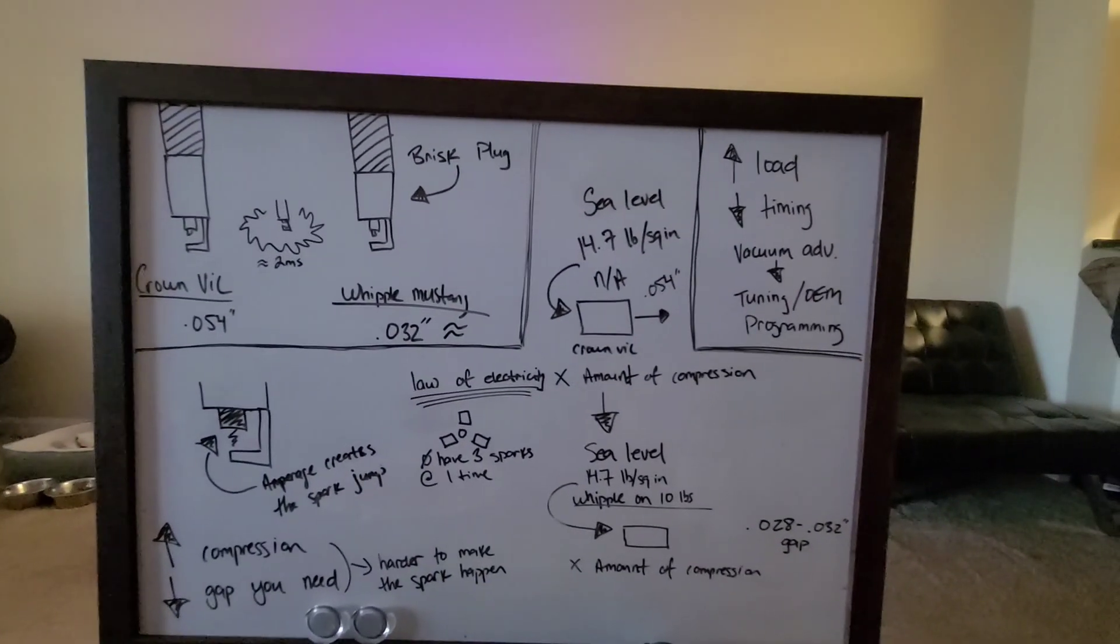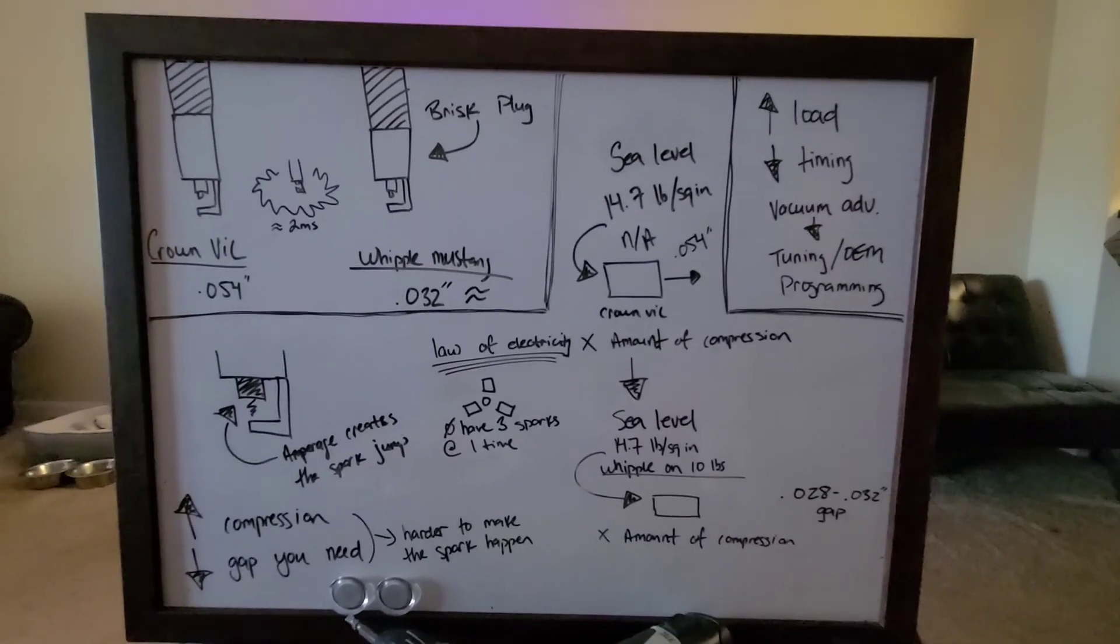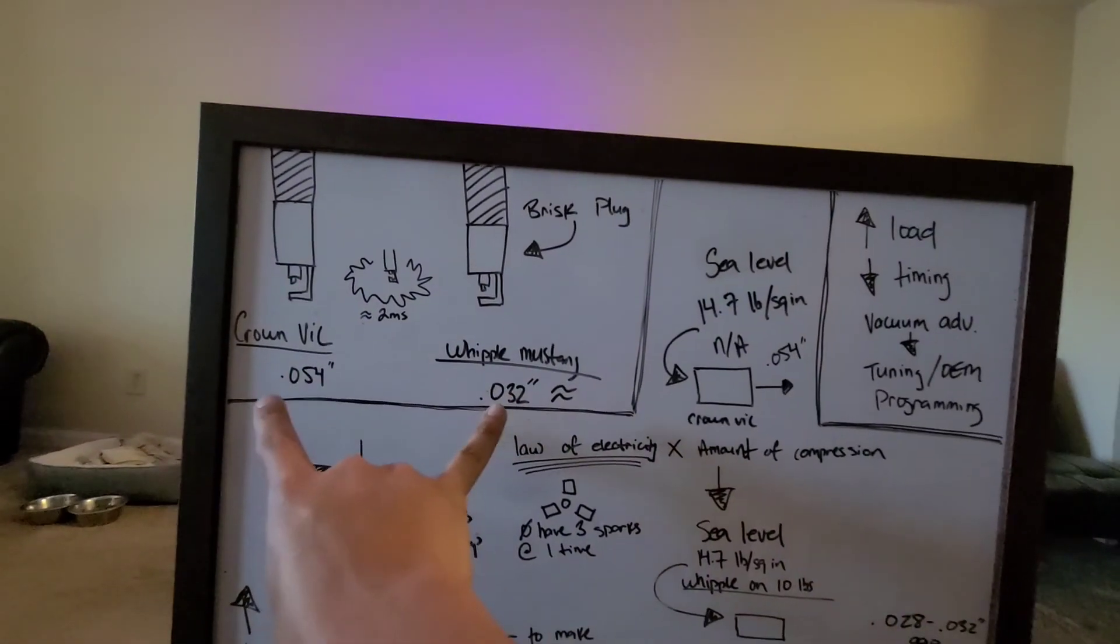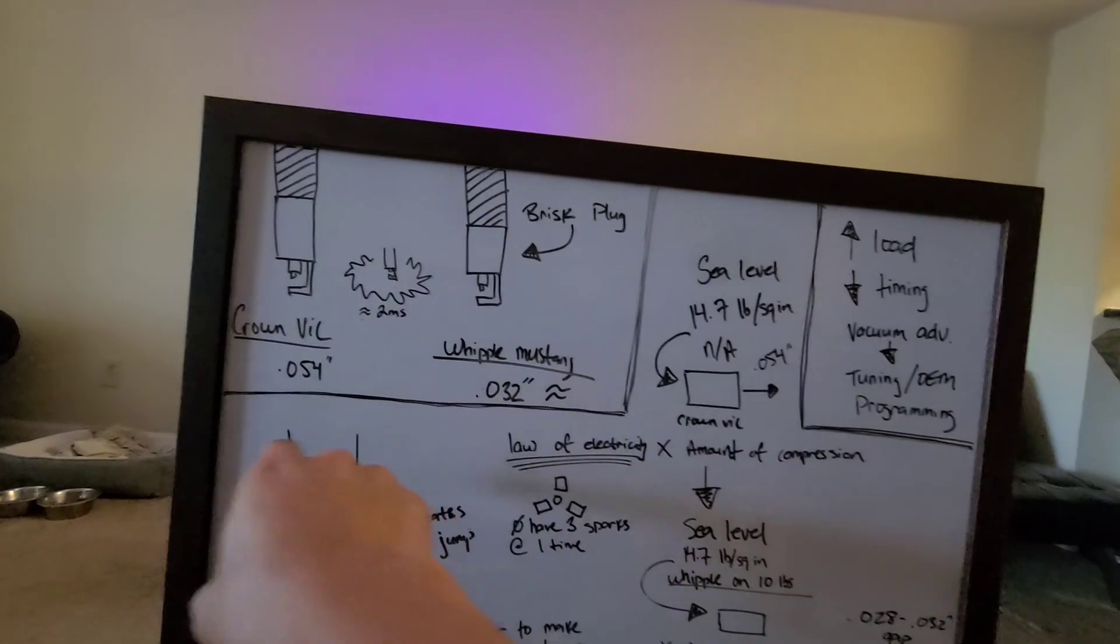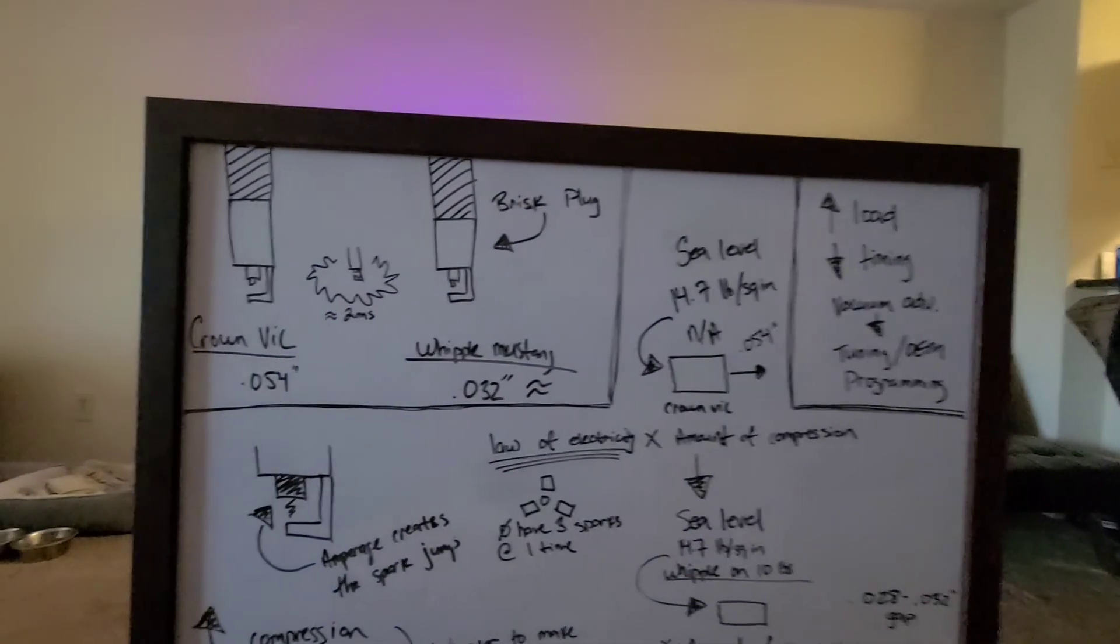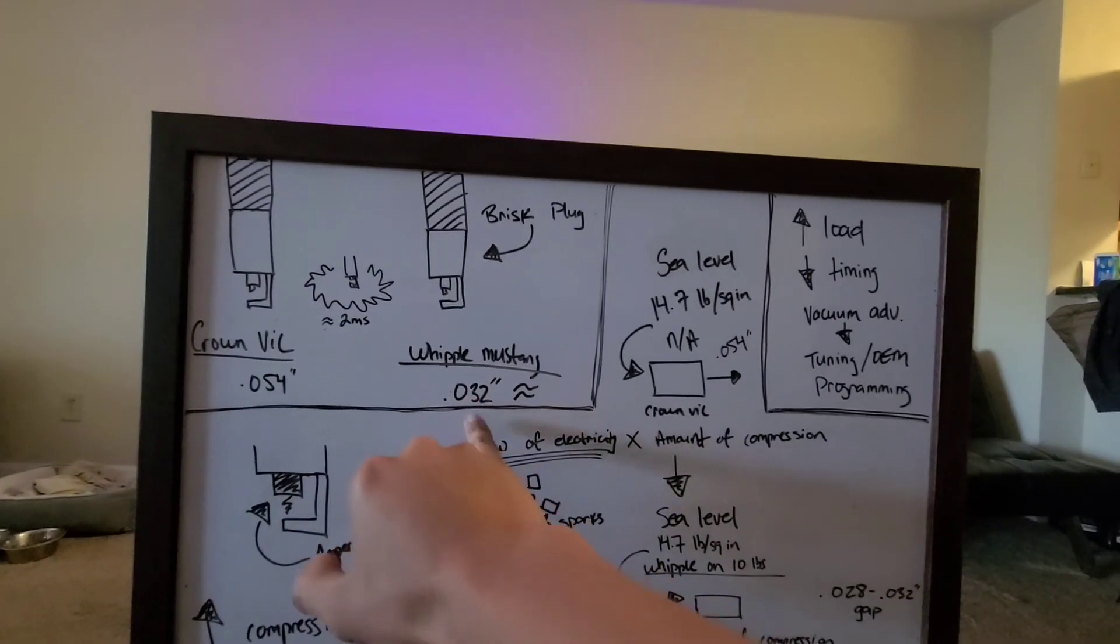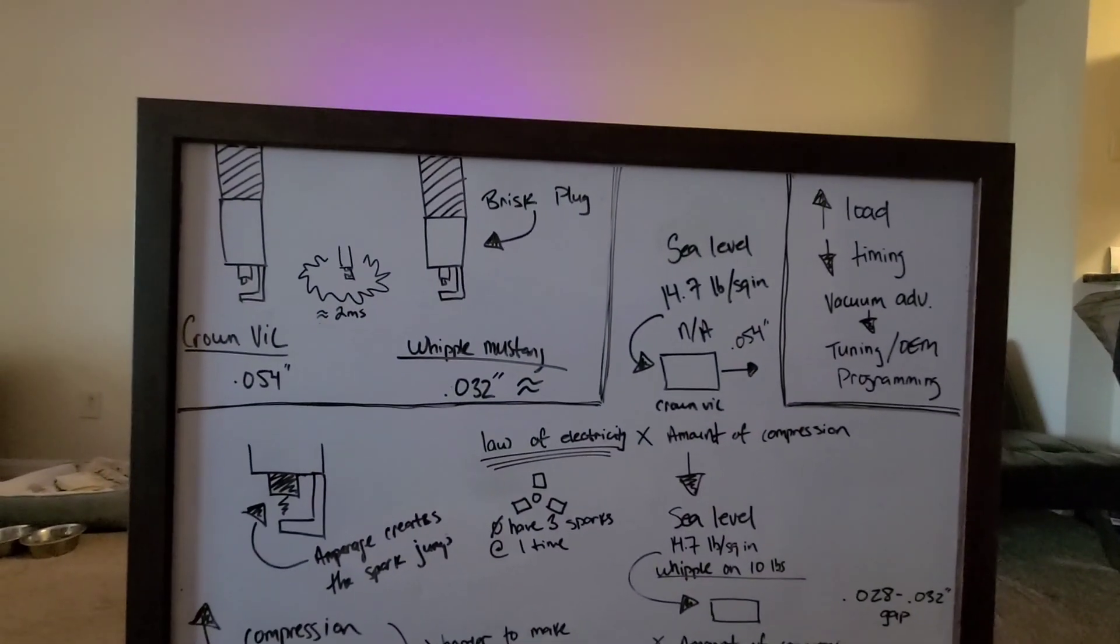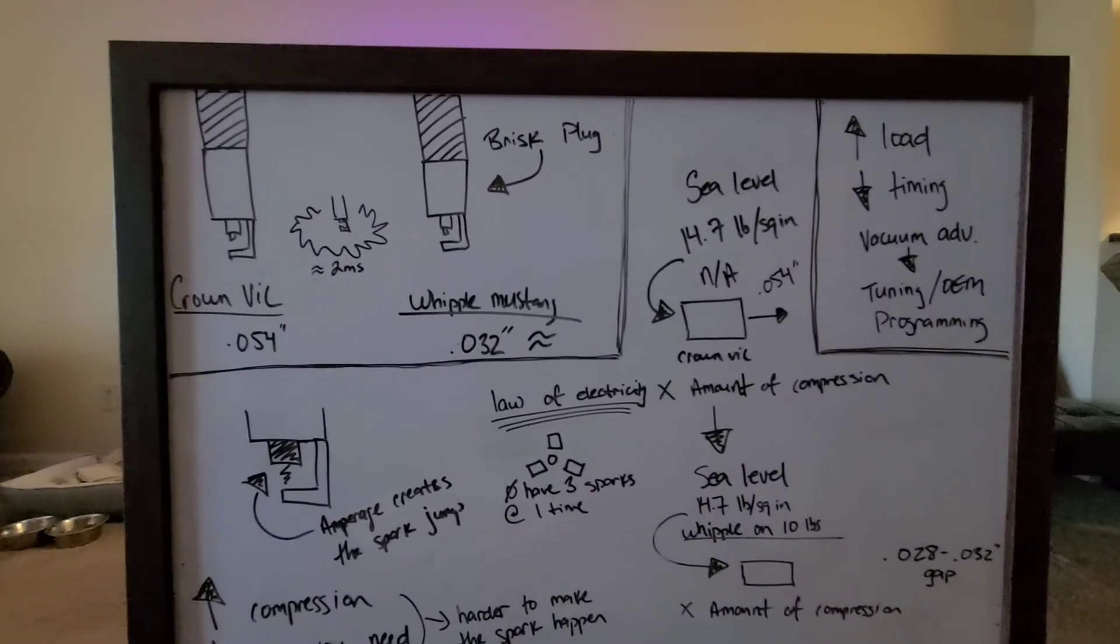Okay, so with those two things in mind, this is a general overview of what goes on and what people will refer to when they talk about ignition timing. Two very common examples right here. Basic Crown Victoria and a Whipple Mustang, two very common cars. So spark plug gap 54 thousandths, spark plug gap of around 32 thousandths, give or take. Because the Whipple is going to depend on how much boost you're running, fuel you're running, et cetera, et cetera, whatever.